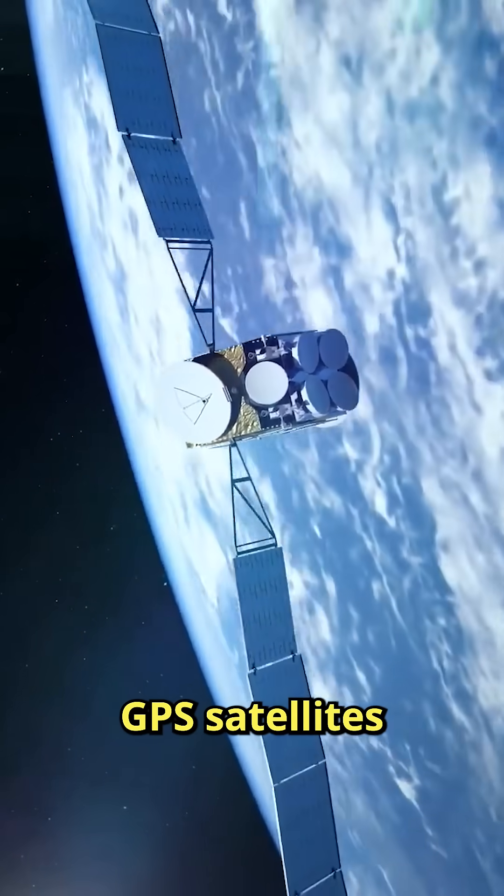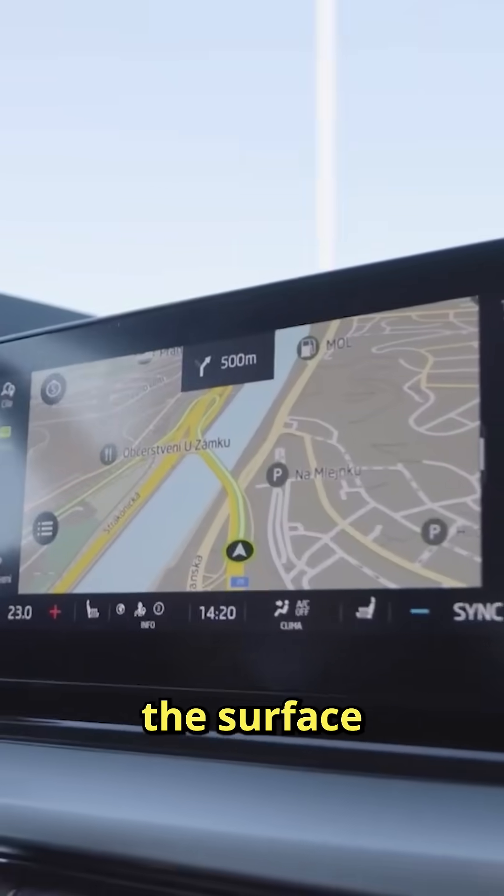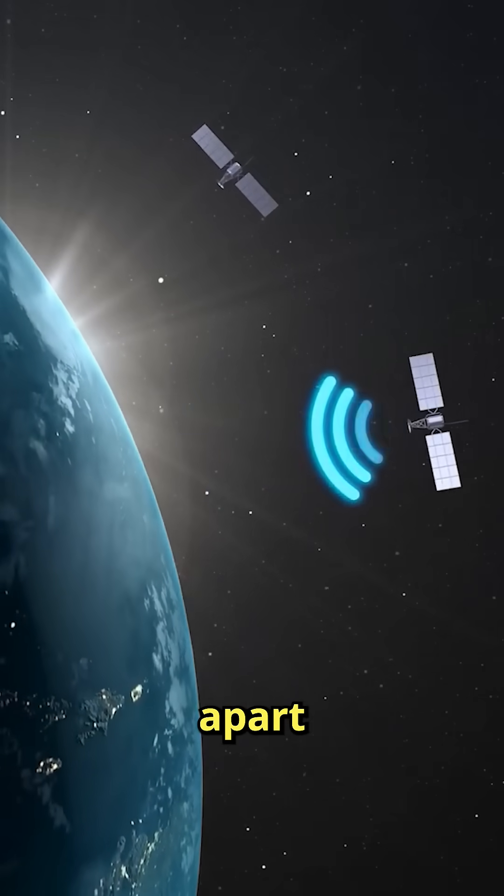For example, GPS satellites orbiting above the Earth experience time faster than clocks on the surface. And if that difference isn't corrected, the whole navigation system would completely fall apart.